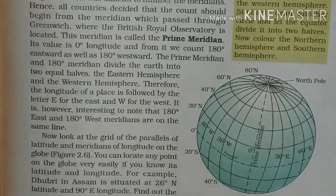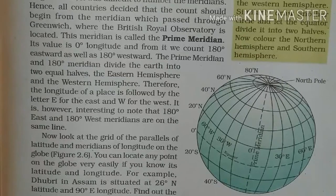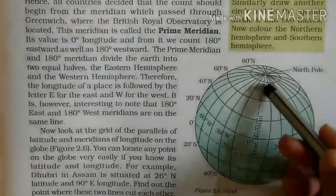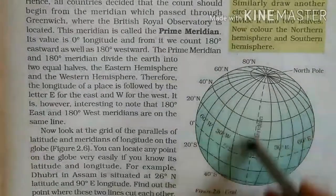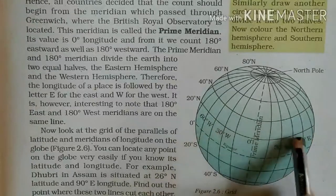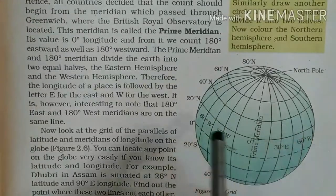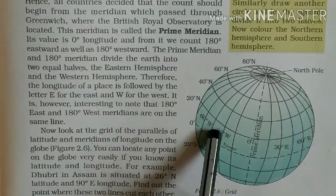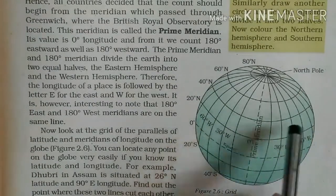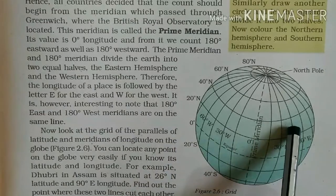The latitudes are divided into two parts by the equator — the Northern Hemisphere and the Southern Hemisphere. Similarly, the prime meridian divides the earth into two equal parts — the Eastern Hemisphere and the Western Hemisphere.